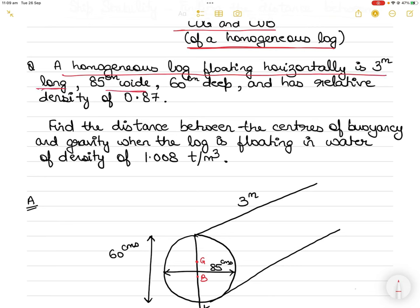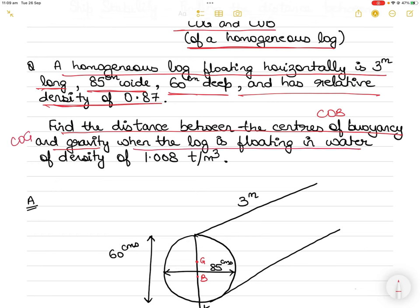A homogeneous log floating horizontally is 3 meters in length, 85 centimeters wide, 60 centimeters deep, and has a relative density of 0.87. You have to find the distance between the center of buoyancy and center of gravity when the log is floating in water of density 1.008 ton per metric cube. Remember to note down the units very carefully.